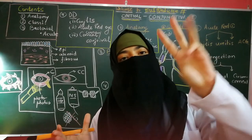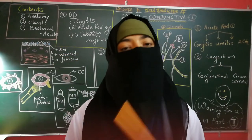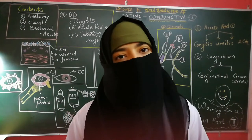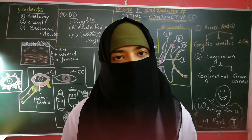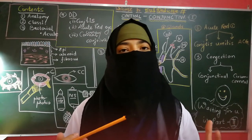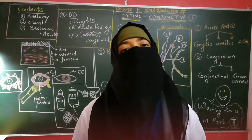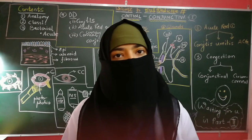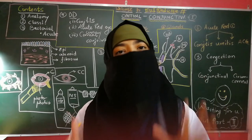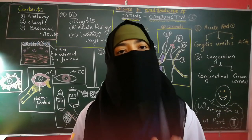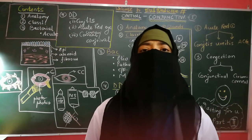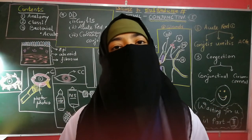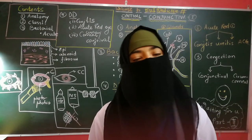The conjunctiva is divided into three parts: the bulbar conjunctiva, which is present over the globe; the palpebral conjunctiva; and the fornix. The palpebral conjunctiva has three further parts — MTO: M for marginal, T for tarsal, and O for orbital part. The fornix is where the bulbar and palpebral conjunctiva meet — it is essentially a cul-de-sac.